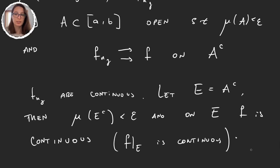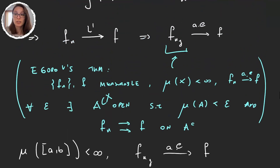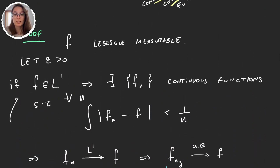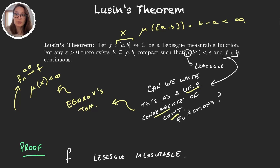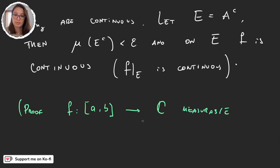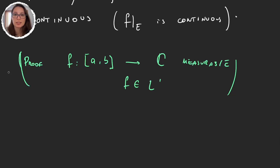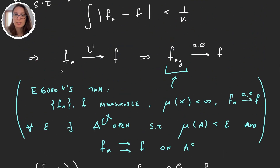That's what we wanted to prove — except for one little detail: we were assuming our function was in L1, but the theorem is more general. It says: take any Lebesgue measurable function. Is it true that a Lebesgue measurable function defined on a bounded set is integrable? Well, not necessarily. But we're going to prove an approximation in the sense that it's true except for some very small set of size epsilon, which we can then add into the argument, and everything works the same.